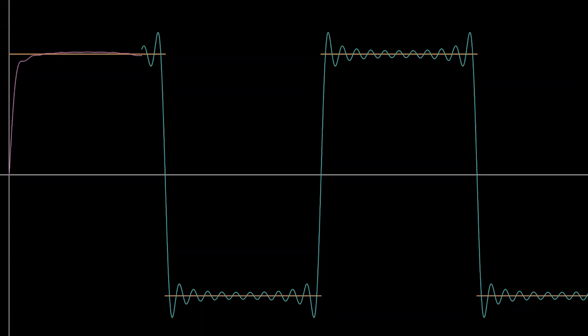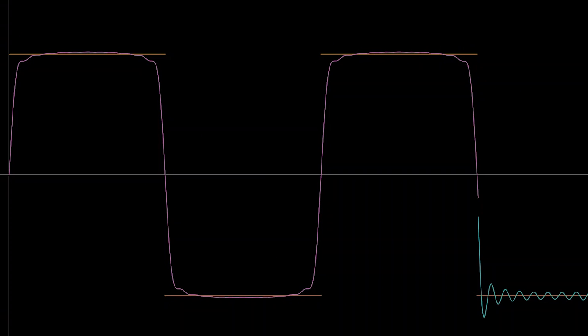What Cesàro summation does is it sort of averages out and it smooths out those spikes that happen in Gibbs Phenomenon. Based on our earlier theorem, since the Fourier series converges, doing Cesàro sums also converges to the same thing. So this is going to converge to the function, but it converges with a different behavior, notably, no Gibbs Phenomenon.